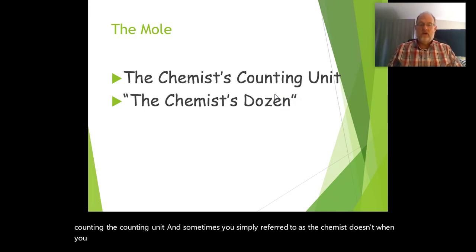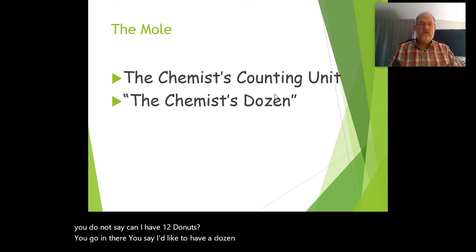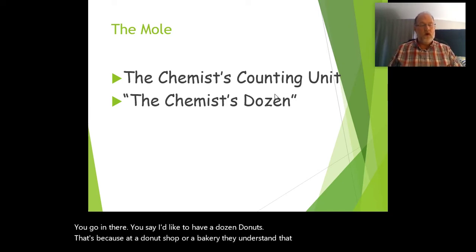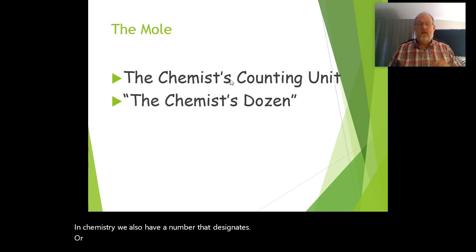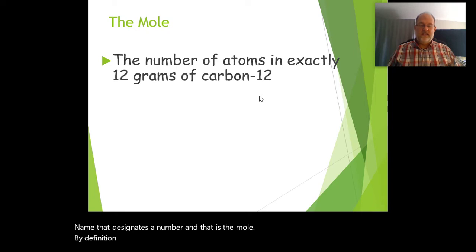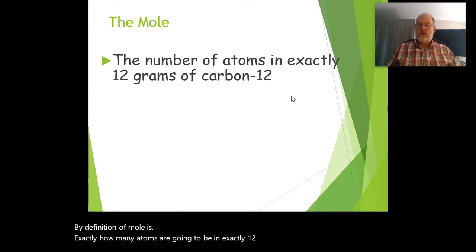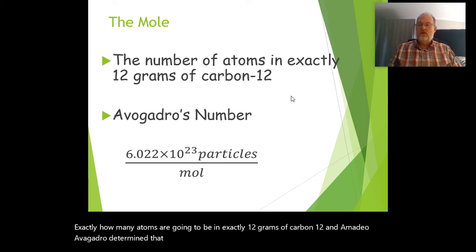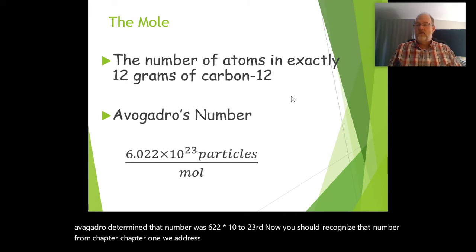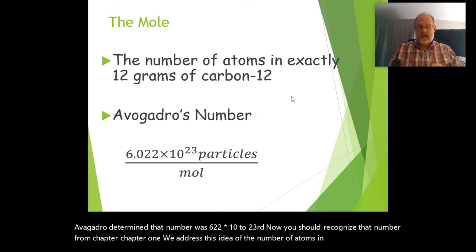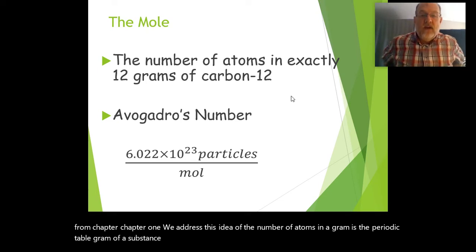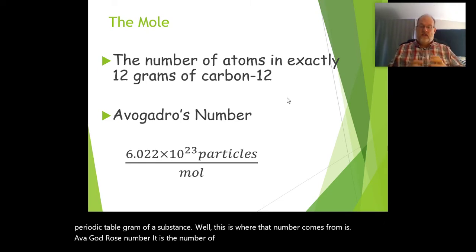When you go to Dunkin', you don't say 'can I have 12 donuts?' — you say 'I'd like a dozen donuts.' That's because at a bakery, their term for 12 is a dozen. In chemistry, we also have a name that designates a number, and that is the mole. By definition, a mole is exactly how many atoms are in exactly 12 grams of carbon-12. Amedeo Avogadro determined that number to be 6.022 × 10²³. This is Avogadro's number — the number of particles in the counting unit called the mole.